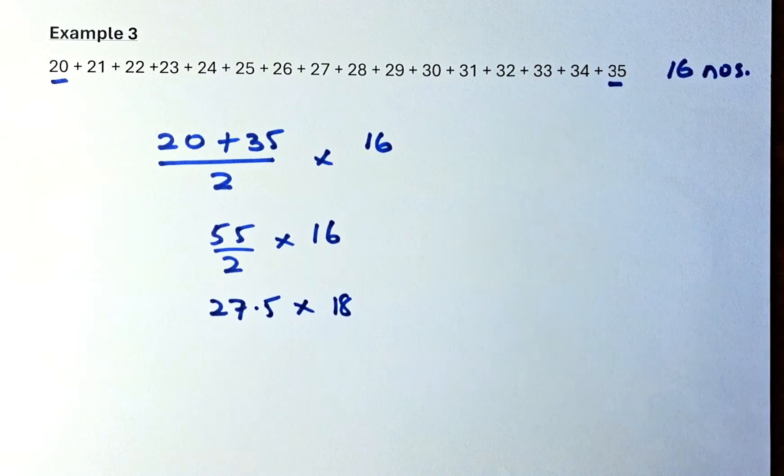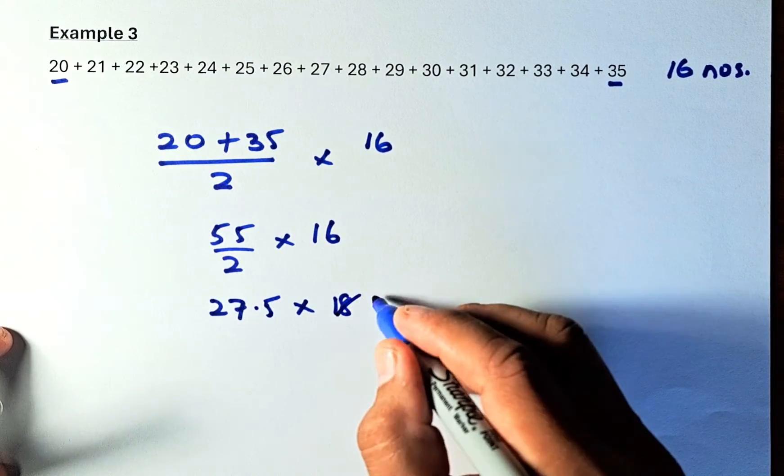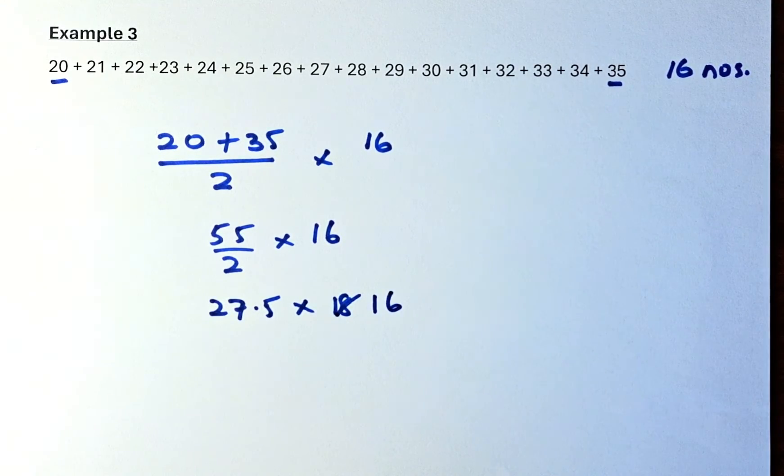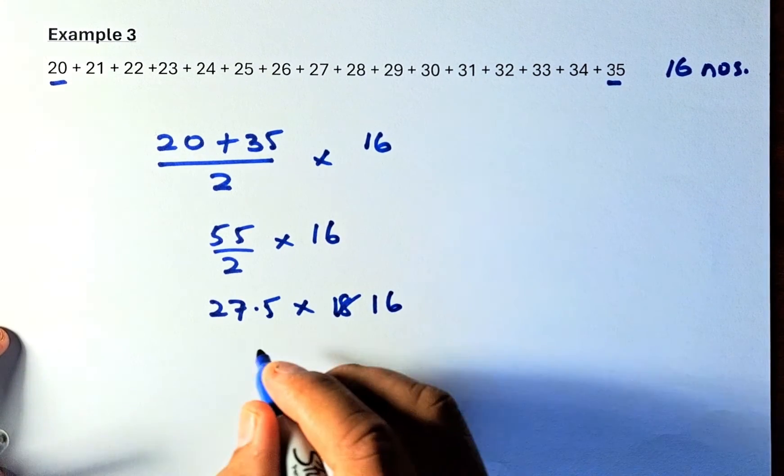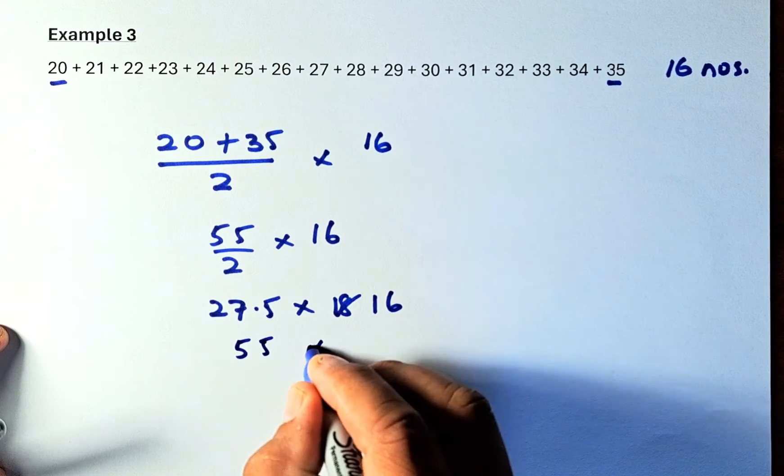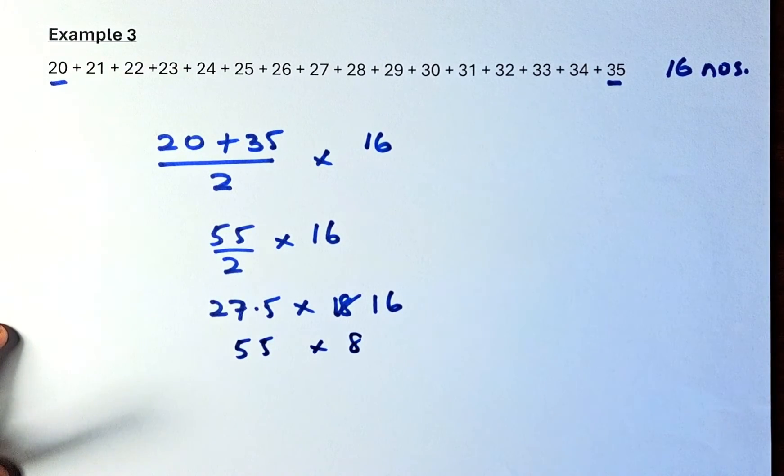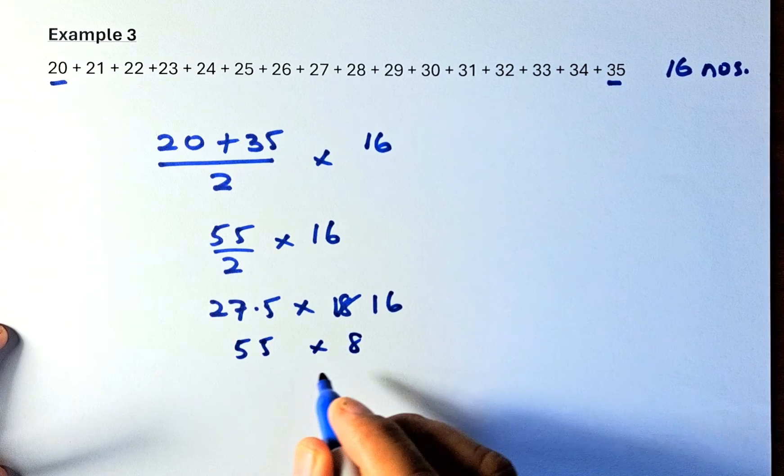To multiply, you can double and half, times 16. You can multiply, double and half. So double of 27.5 is going to be 55 and half of 16 is going to be 8. If you still cannot multiply that, you can double again and half it.